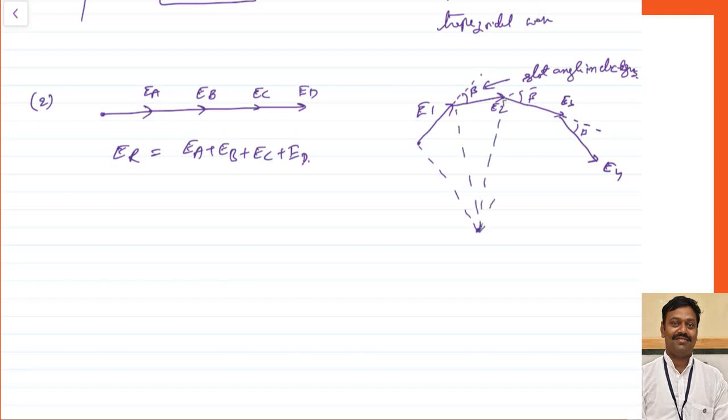The radius will be the same for every point. If you want to calculate the resultant value, the resultant value can be calculated as the vector sum of all these. This is my vector sum, and this is my value of ER.